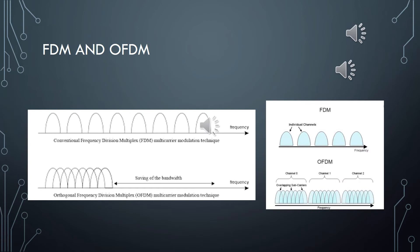FDM is a multiplexing method used to divide a channel into many non-overlapping subchannels. FDM allows multiple users to share one single link. Today, we're going to talk about OFDM, a variation of FDM. OFDM is a very popular and most used multiplexing method used for the latest wireless and telecommunications standards, such as Wi-Fi 802.11ac, 4G and 5G cellular techniques, satellites, and many others.